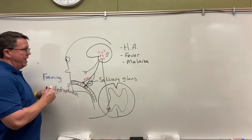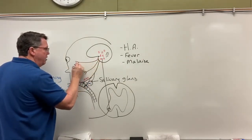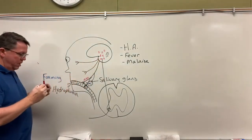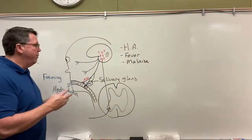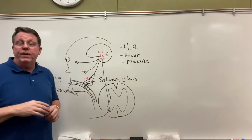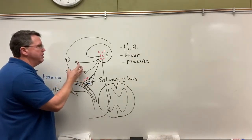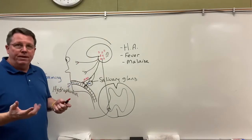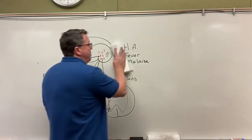Rabies also affects sensory nerves that go to the face. If you were to wave a piece of paper or create any air draft in front of these patients' faces, it causes spasms and extreme irritation. This sensory hypersensitivity is another symptom as the disease progresses.